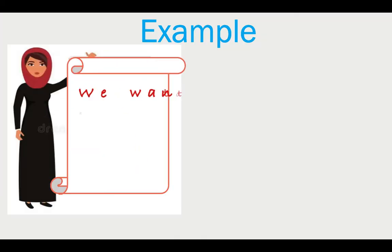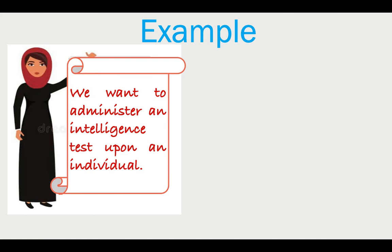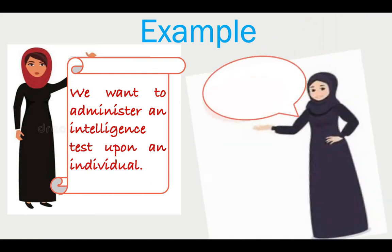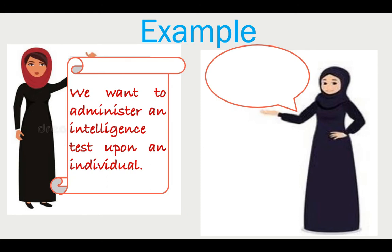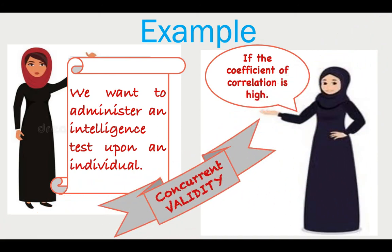Suppose we administer an intelligence test upon an individual who has already taken that test once before, and the intelligence scale is administered again upon the same individual. If the correlation between the previous intelligence test and the current intelligence test is high, then we say the intelligence test has high concurrent validity.